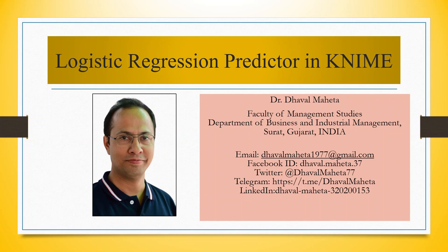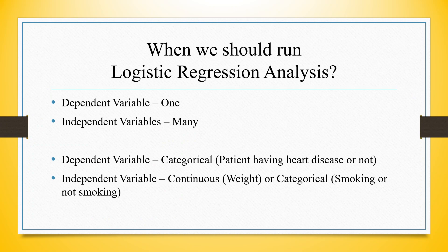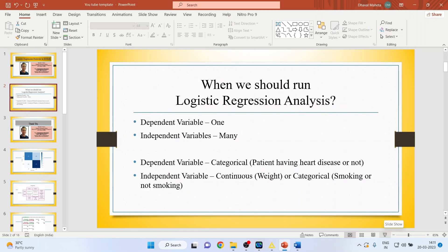Hello to all my viewers, this is Dr. Tawal Mahat. Today we are going to understand how to run logistic regression predictor in KNIME. We run logistic regression analysis in a situation where we have one dependent variable on a categorical scale — for example, a patient having heart disease or not, or a customer buying a product or not. There can be many independent variables, which can be on a continuous or categorical scale.